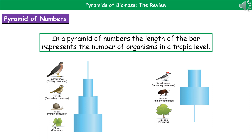One of the key things to remember is that because it's all to do with the number of organisms, these pyramids aren't always going to be pyramid shaped. Sometimes they'll look like the one on the left because we've got more clovers than snails, more snails than thrushes, and more thrushes than sparrowhawks.